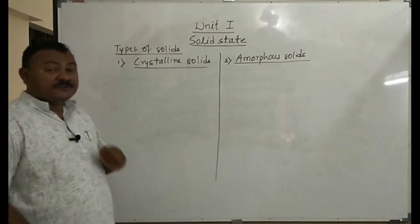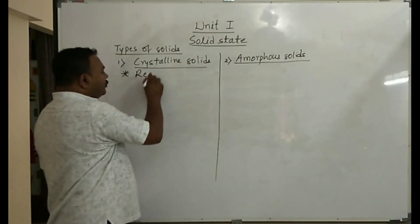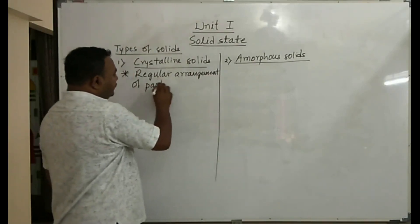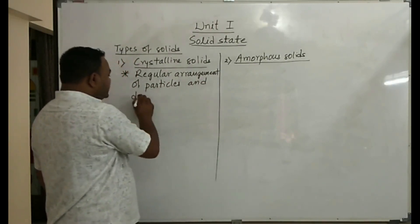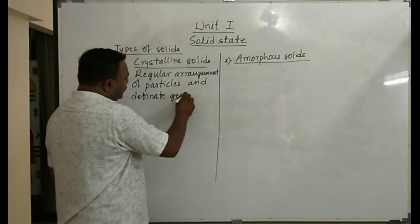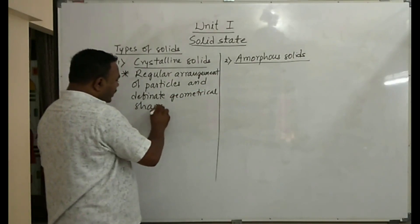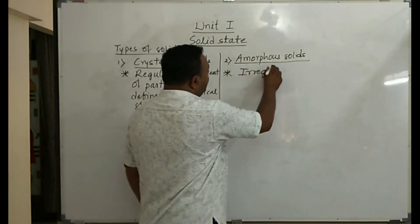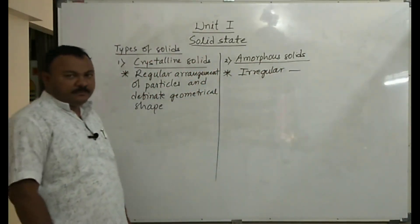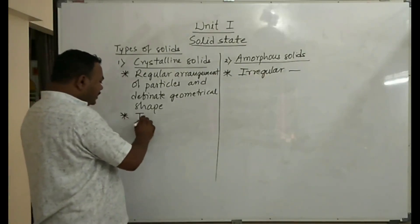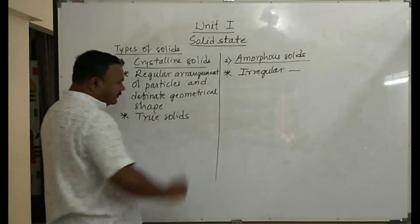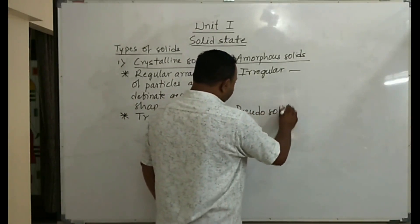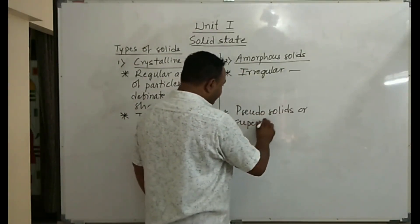Crystalline solids are solids with a regular arrangement of particles and a definite geometrical shape. Amorphous solids are solids with an irregular arrangement of particles and no definite geometrical shape. Crystalline solids are called true solids, whereas amorphous solids are called pseudo solids or super cooled liquids.